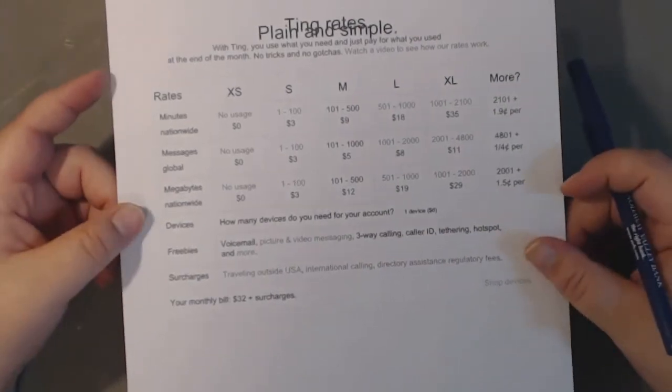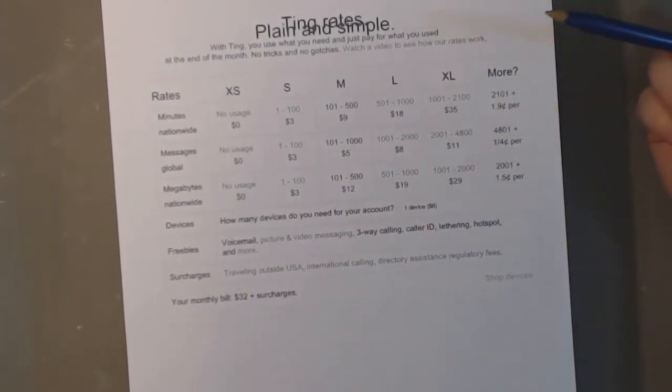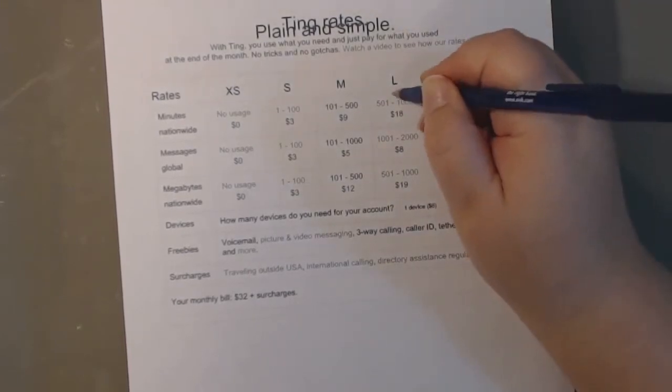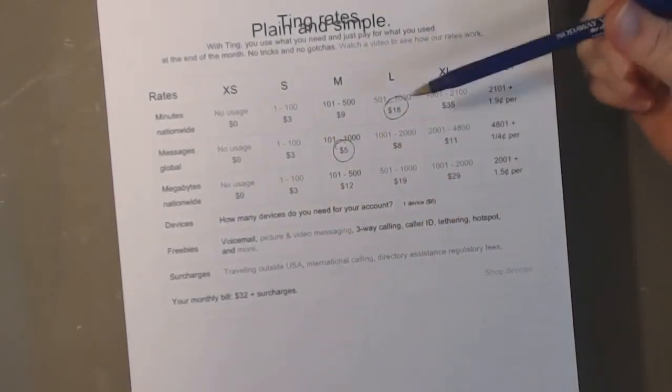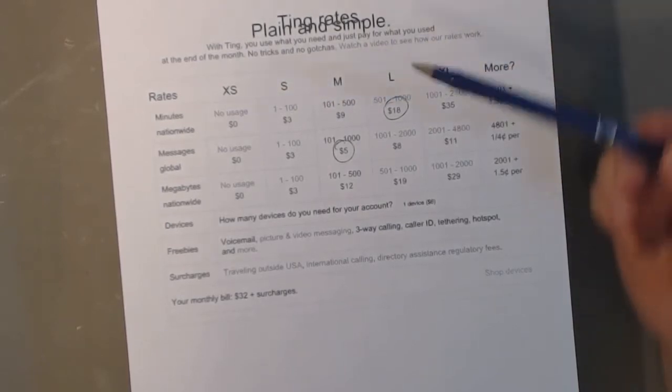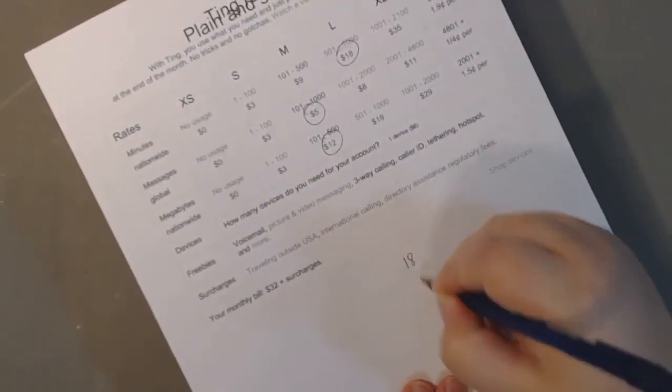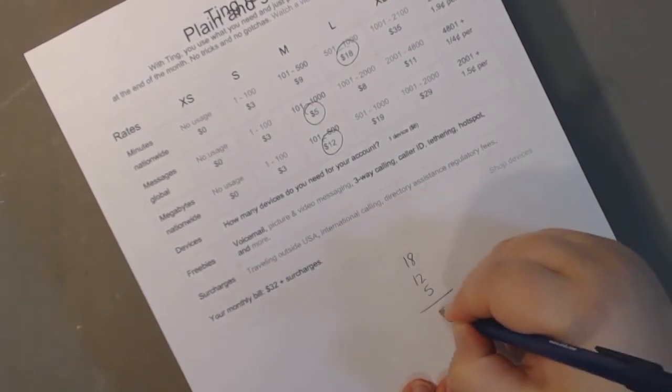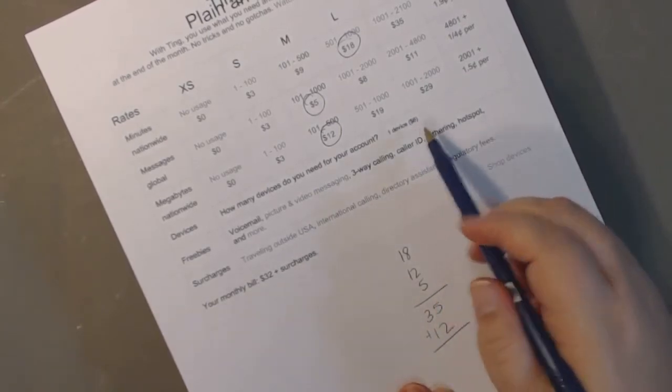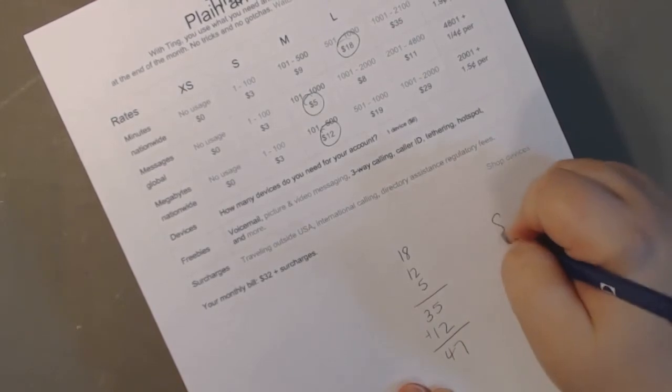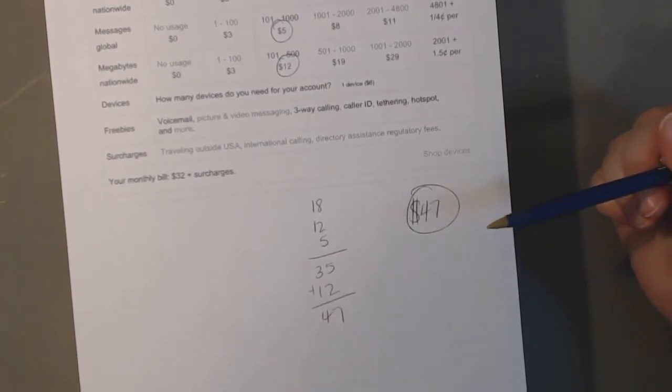This is just the chart that I printed off their website just to kind of show you guys. So this month, we happen to use, I think we're at like 600 minutes, and that's $18. And our messages, we went over by a little bit, and we're at $5. So we barely switched from the small to the medium plan. And then megabytes, I think we're also in the medium plan. So that's 18, 12, and 5. So that's $35, plus we do have the $12 for the device fee. So that's $47, plus taxes and fees that my husband and I spent on our phone plan this month.